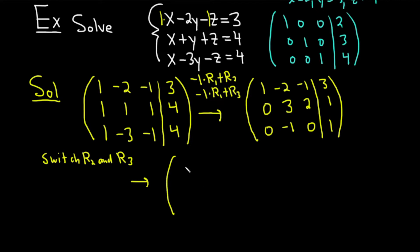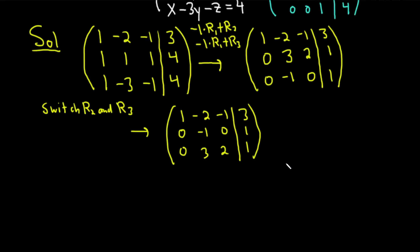Let's put an arrow here. This will be switching row 2 and row 3. So row 1 stays the same. And now instead of row 2, we're going to write row 3. So it'll be 0, negative 1, 0, 1. And then now we're going to write row 2 down here. 0, 3, 2, 1. So all we've done was we switched the two rows. That's one of the row operations you're allowed to do.